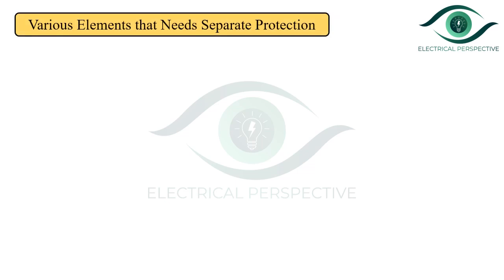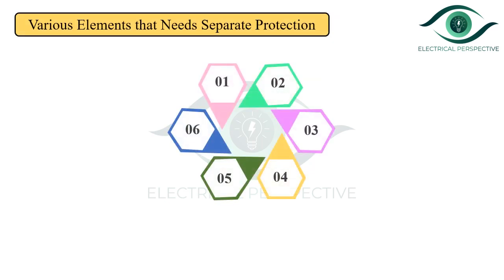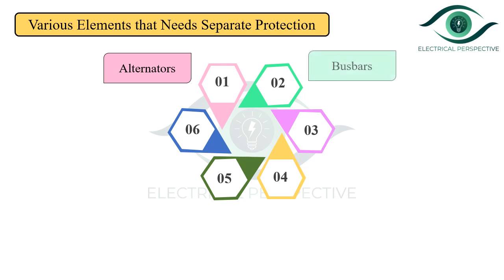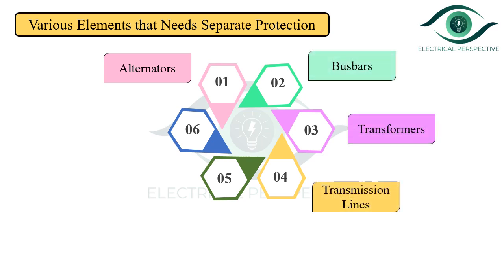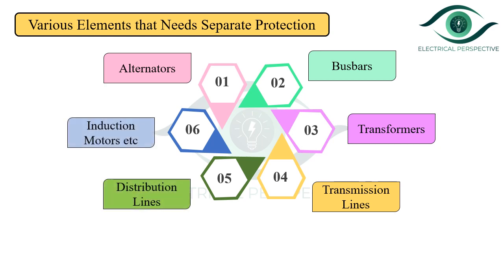These are some major elements that need separate protection: alternator, bus bars, transformer, transmission lines, distribution lines, induction motors, etc.